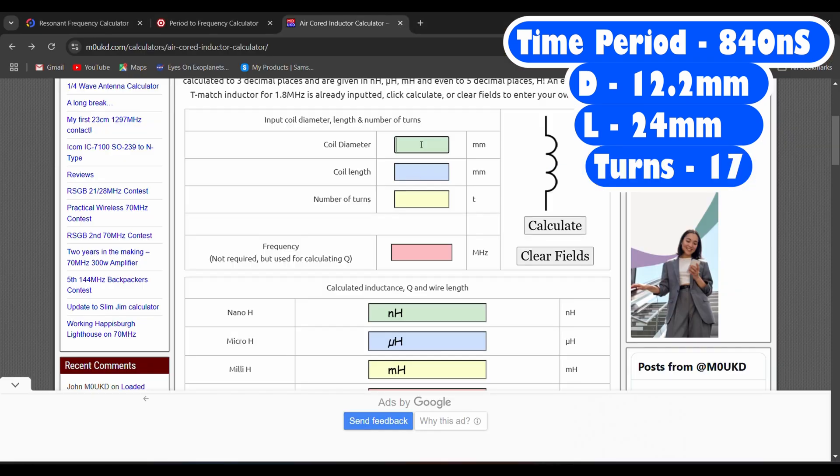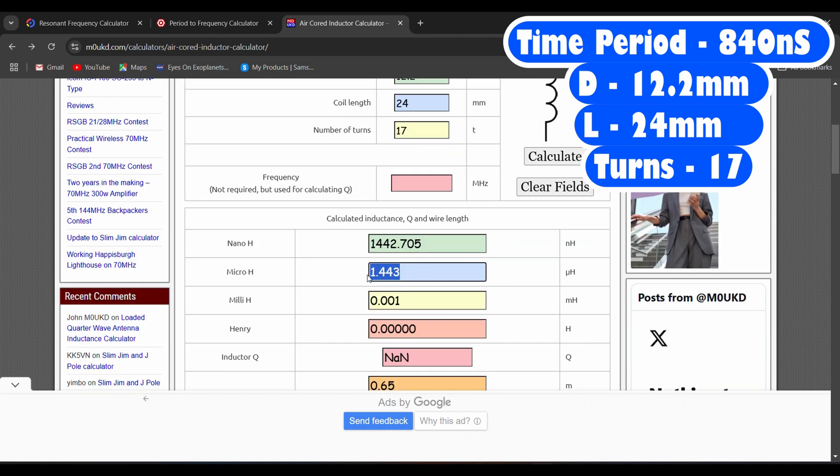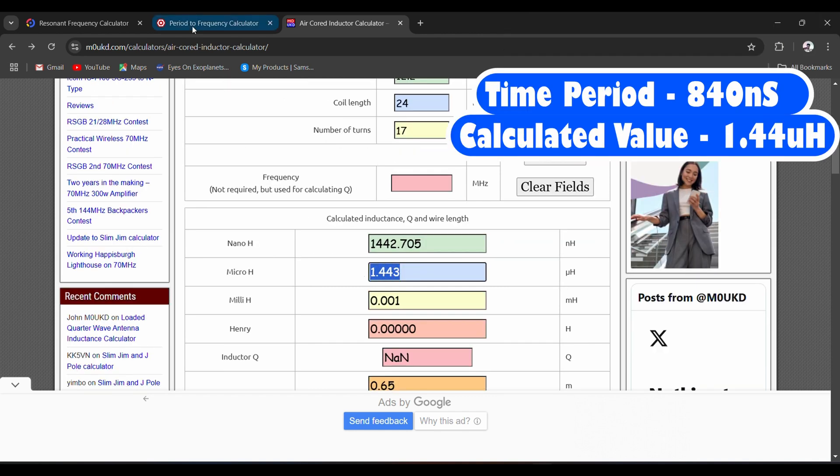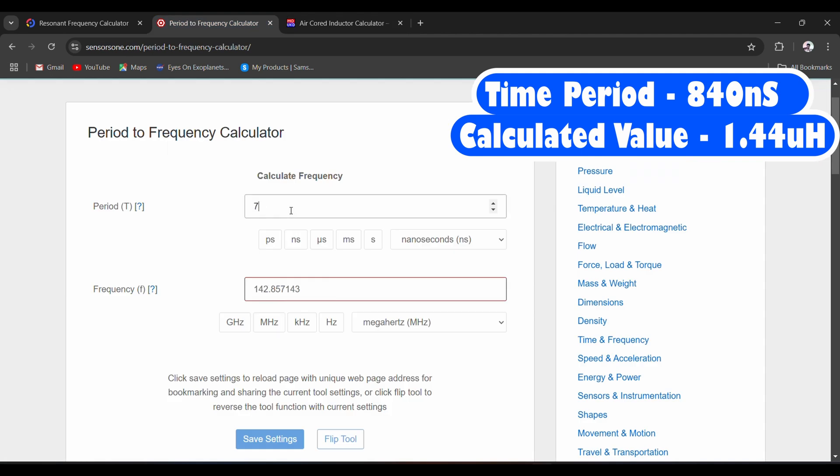Okay, so the diameter was 12.2, the length was 24, and the number of turns was 17. So as you can see, it's 1.443 microhenry. And if you remember the time period, it was 840 nanoseconds.